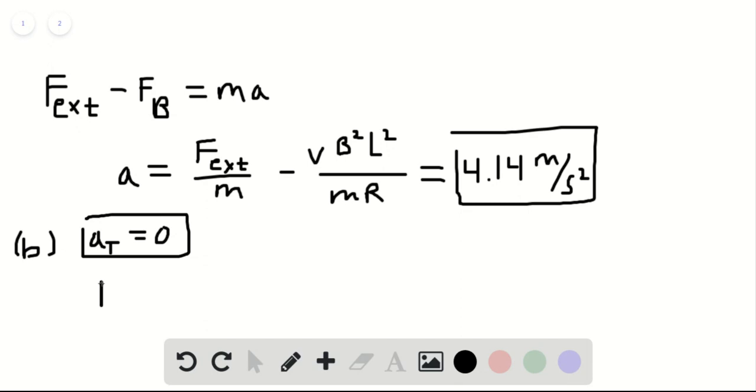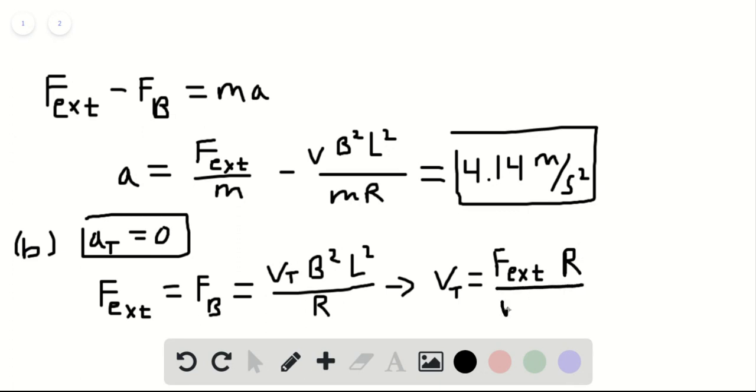The terminal velocity happens when the external force is equal to the magnetic force. Therefore, this is equal to V terminal times B squared times L squared divided by resistance. Solving for the terminal velocity, we find that this is equal to F external multiplied by the resistance divided by B squared multiplied by L squared.